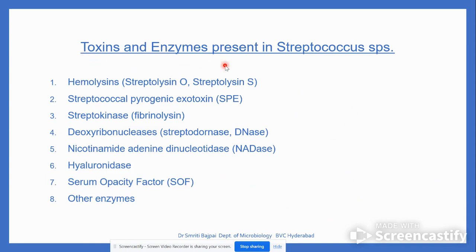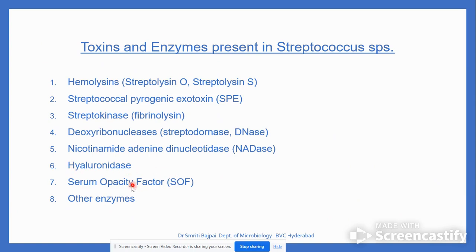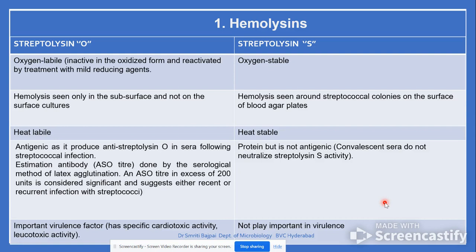Toxins and enzymes present in Streptococcus species include: hemolysins — streptolysin O and streptolysin S; streptococcal pyogenic exotoxin (SPE); streptokinase (fibrinolysin); deoxyribonucleases (DNases); nicotinamide adenine dinucleotidase (NADase); hyaluronidase; serum opacity factor; and other enzymes.